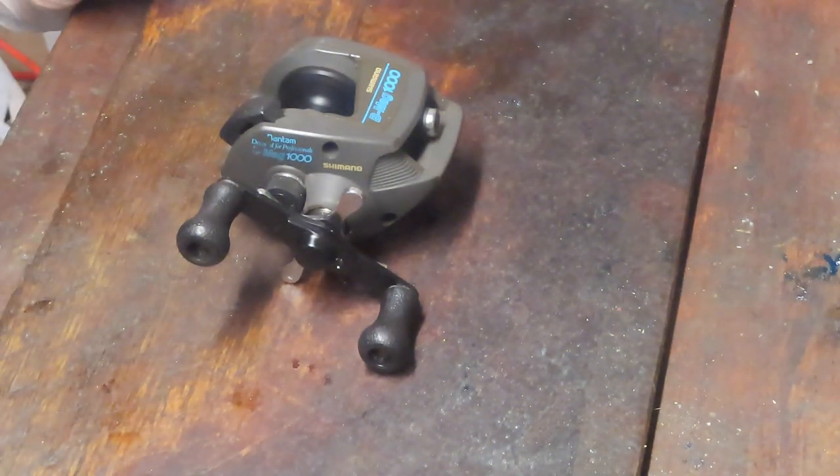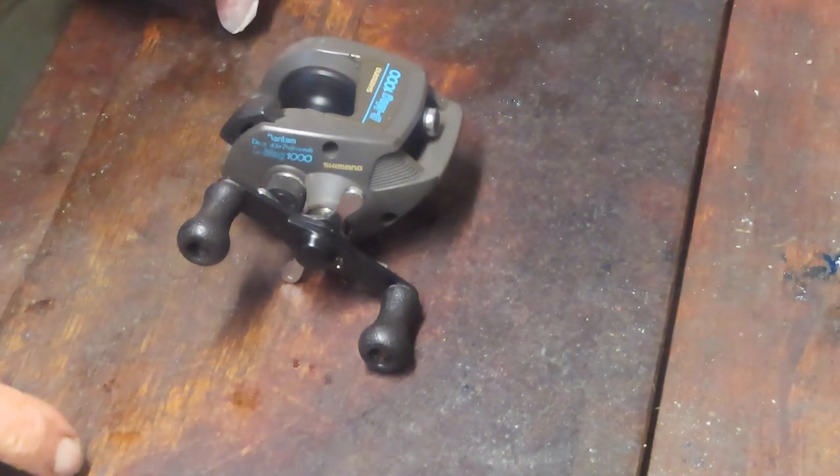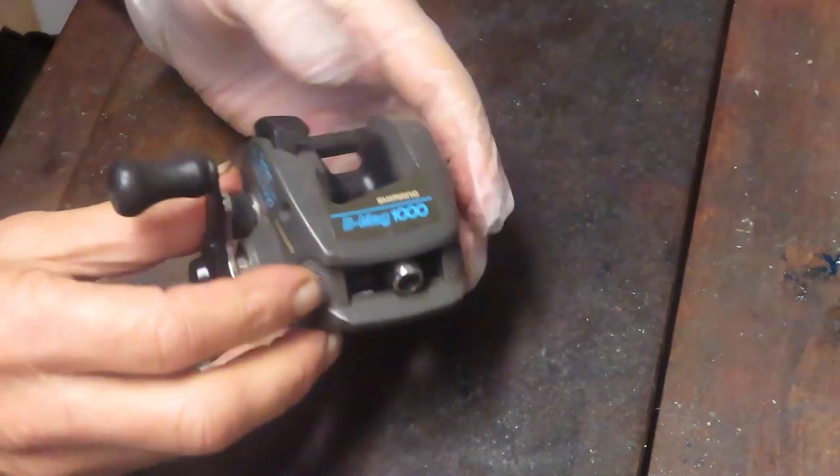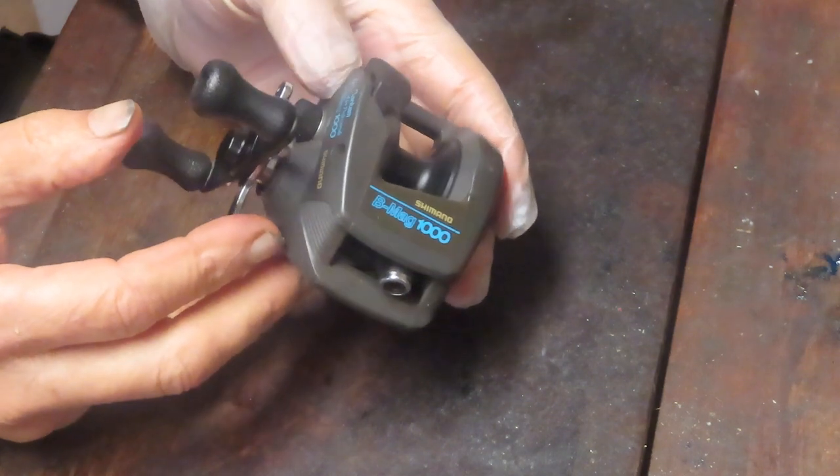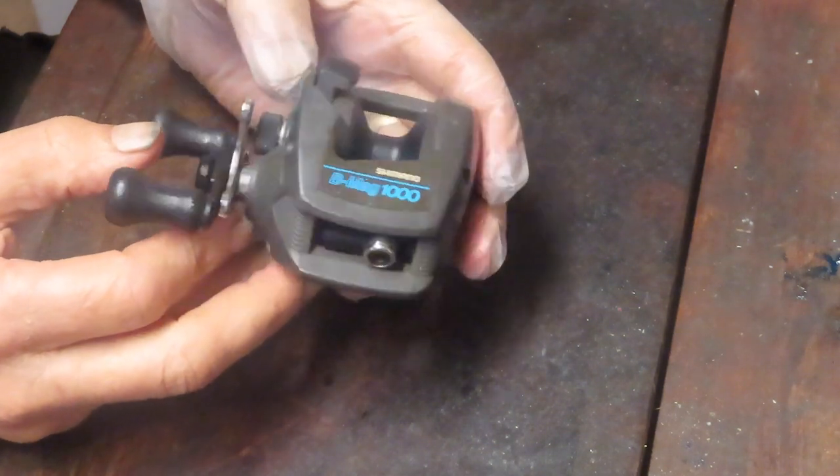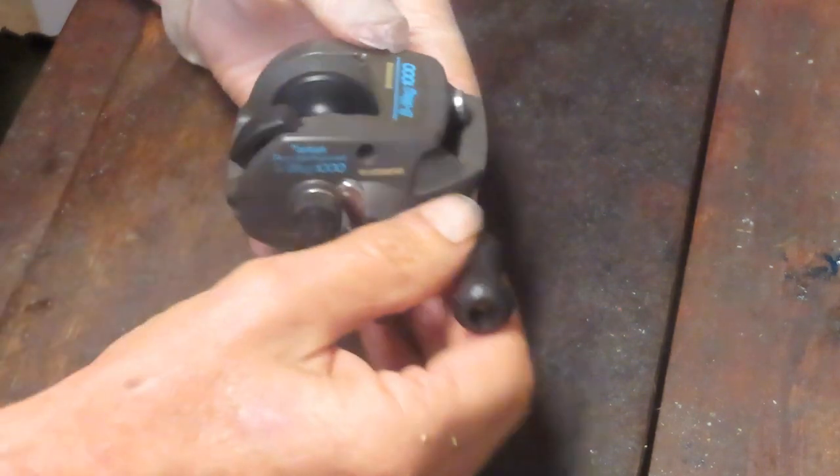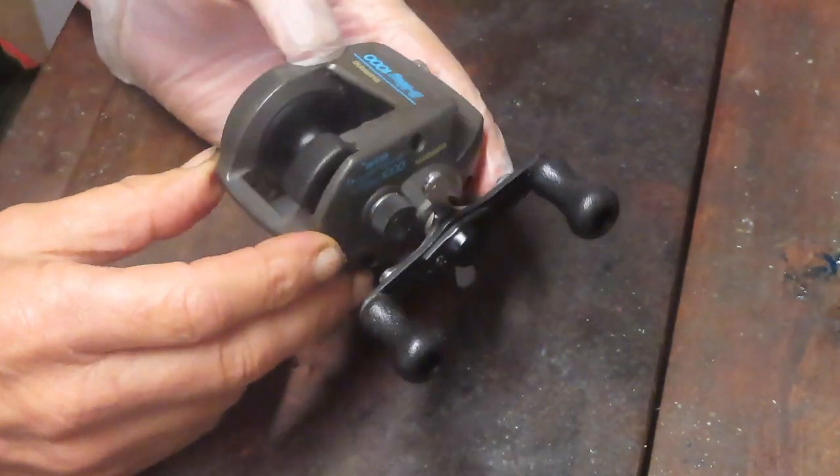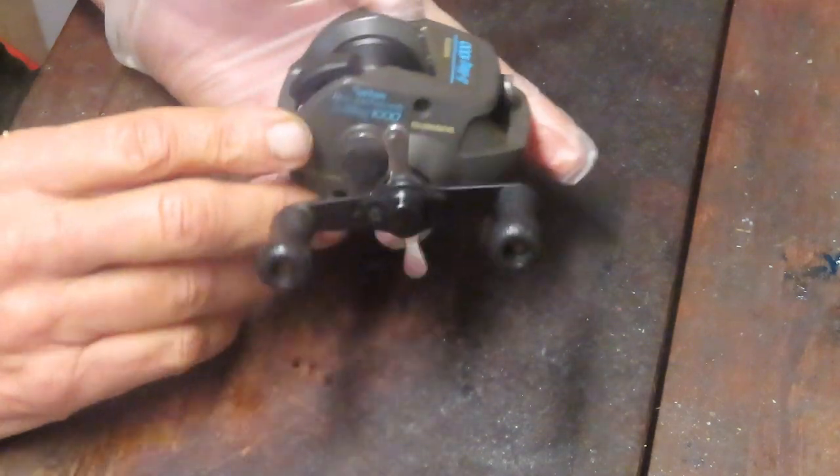Hi, this is Dennis with Second Chance Tackle and today I'm going to take on a first or second generation graphite bait caster. It's the Bantam, a BMag 1000. Kind of intrigued by this one. I have one similar to it and I'm going to take this apart.